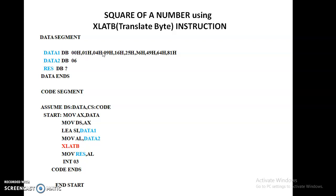That means: this is the 1st location, 2nd location, 3rd location, 4th location, 5th location, and this is the 6th location. SI now becomes SI plus 6, so it is pointing to the 6th location. Whatever value is present at this location is now loaded into the accumulator register. Before the execution of the translate byte instruction, our SI is pointing to the starting location and AL contains 6. After the execution, our SI is pointing to the 6th location and our AL value is 36. We then move that value explicitly into result, storing the square of the number.